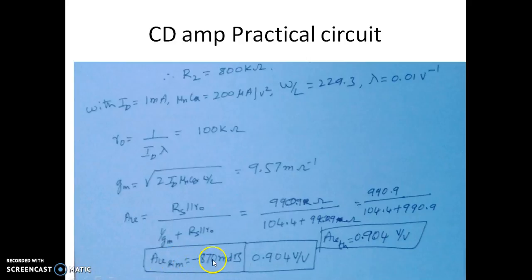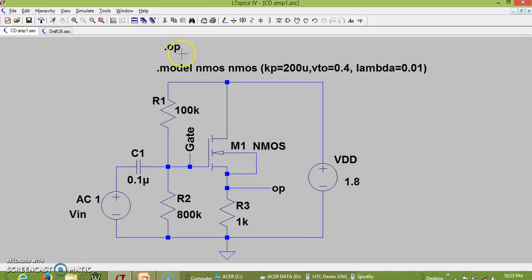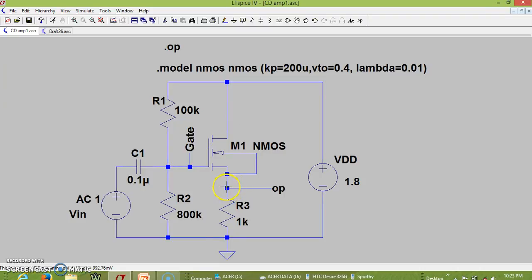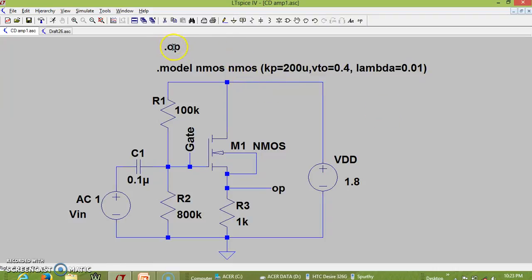Let us now simulate the common drain amplifier using these values. The circuit is set up with R1 equals 100 kΩ, R2 equals 800 kΩ, RS equals 1 kΩ, and Kp equals 200. We apply an AC signal and perform the frequency response analysis. The simulation runs from 1 Hz to 1 GHz with 100 points per decade.